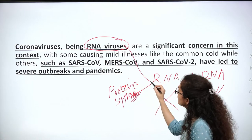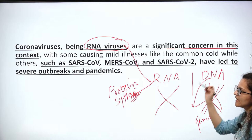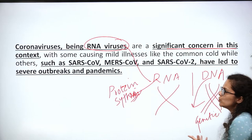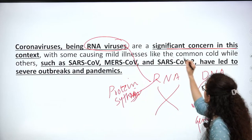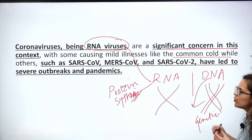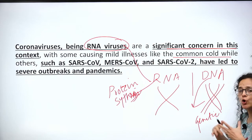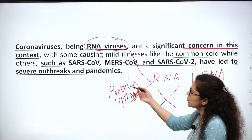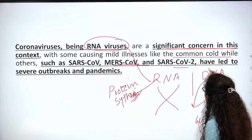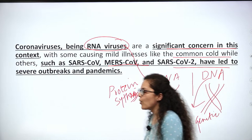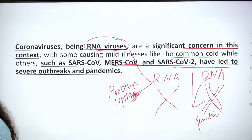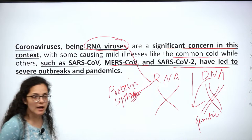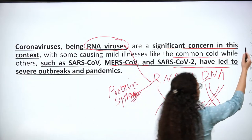RNA is a significant concern in this context. While some coronaviruses cause mild illness like the common cold, SARS-CoV and MERS-CoV caused several outbreaks during the pandemic. During the pandemic, these viruses showed a very wide impact and spread at a large scale.